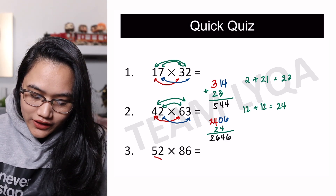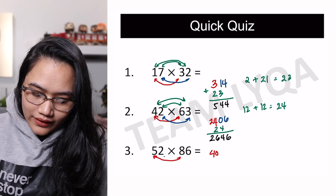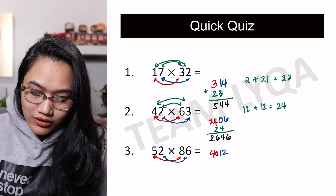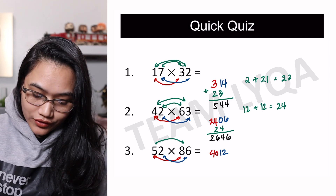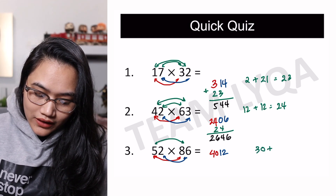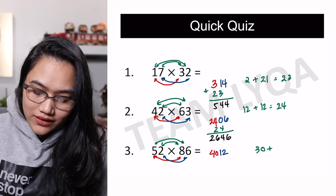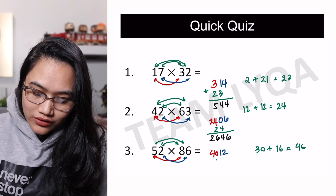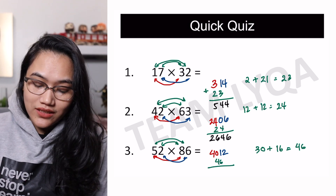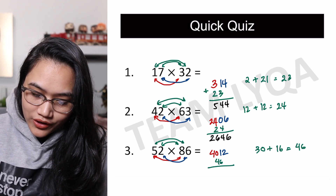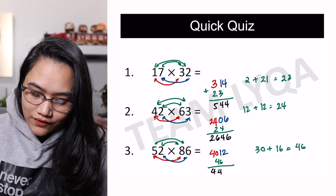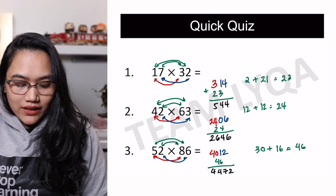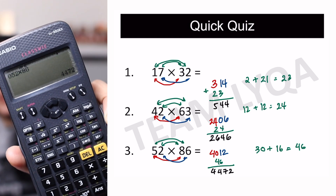Last one: 52 times 86. First: 5 times 8 is 40. Last: 2 times 6 is 12. Outside: 5 times 6 is 30. Inside: 2 times 8 is 16. 30 plus 16 is 46. Add that in, keeping the last digit as is, and you get 4,472. Quick check: 52 times 86 is 4,472. Correct!